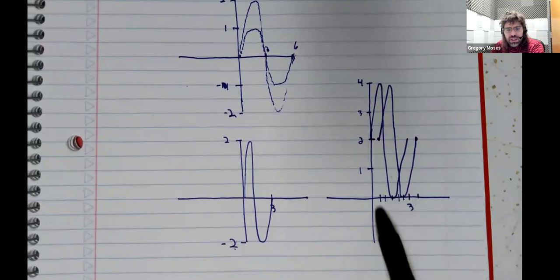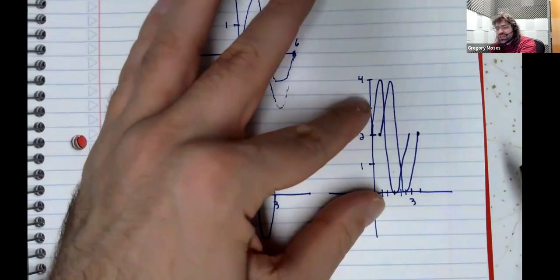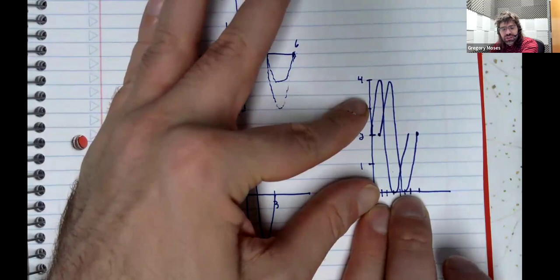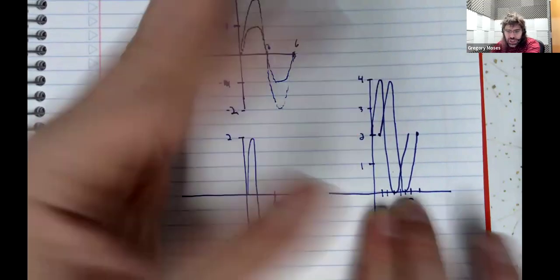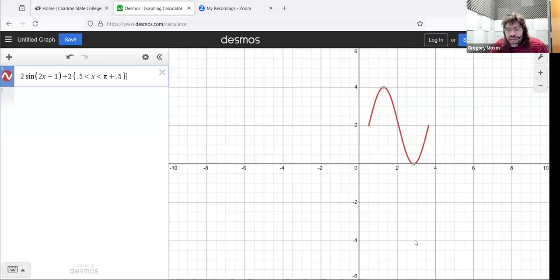So this, I did not do a good job, obviously, of making this to scale. I mean, this is three in the vertical direction. This is three in the horizontal direction. So, but if we go to decimals, we do get basically that graph.